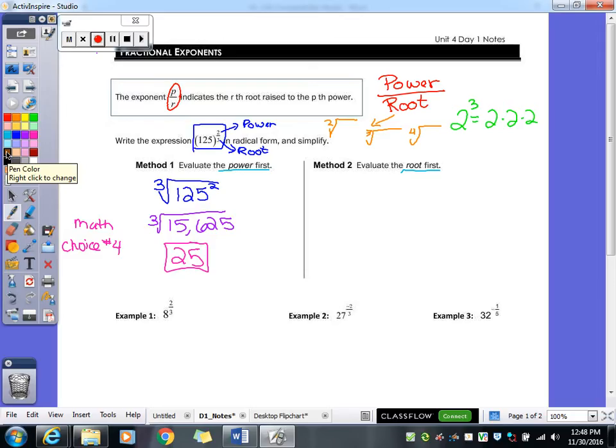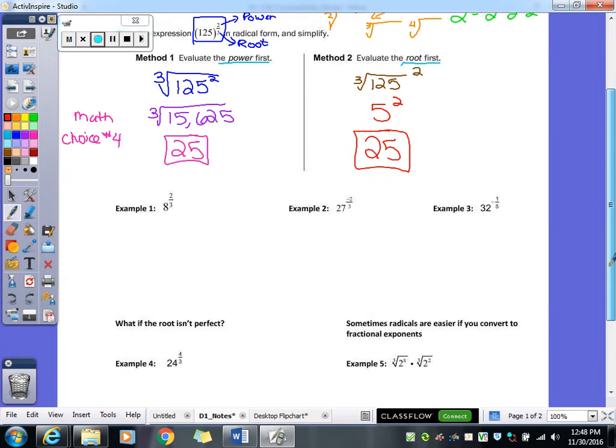So again that's figuring out the power first and then taking the root. As I said the other way you could go about it is taking the root first. So we would do the cube root of 125 and then the power would go outside of the radical because you would take care of that last. So let's figure it out that way. So let's do the cube root of 125. And then we do 5 squared. What do we get? I personally like that way better. I think that's a little easier. You don't get such large numbers. But if you prefer the other way you go right ahead and do whichever one you prefer. But as you can see you get the same answer. Whether you do your power first or your root first we're going to get the same answers.